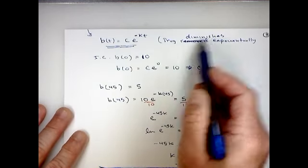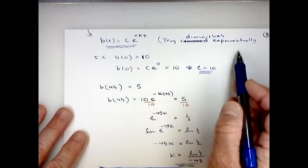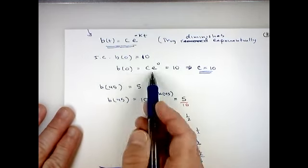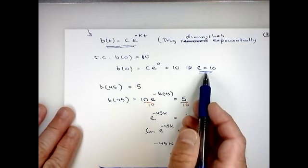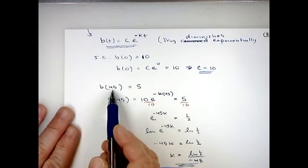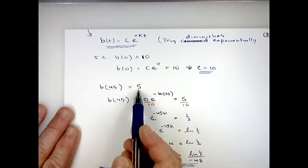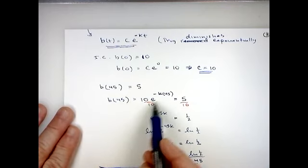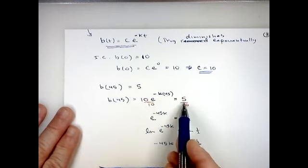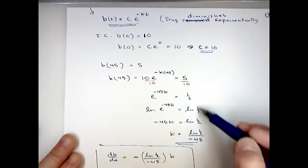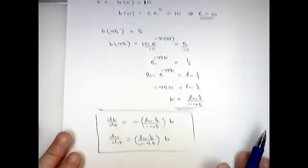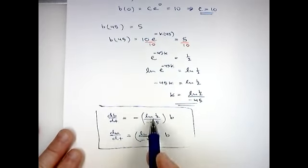Plugging in the initial condition B(0) = 10 gives C = 10. Using the half-life condition: at t = 45 minutes, B = 5. Substituting and solving for k gives us the rate constant. Once k is found, the question only asked us to set up the differential equations, so we just substitute that value in for k.